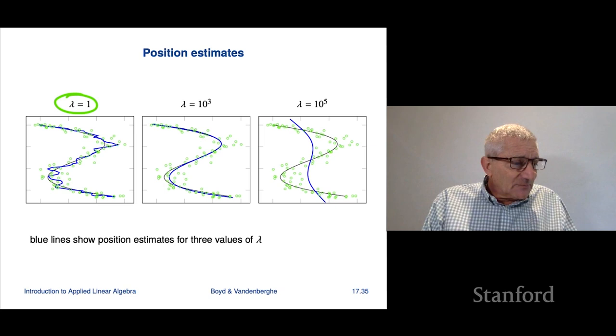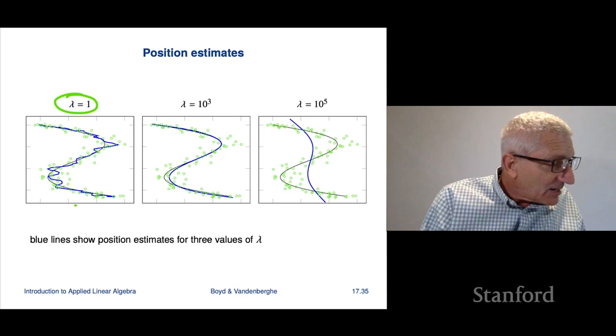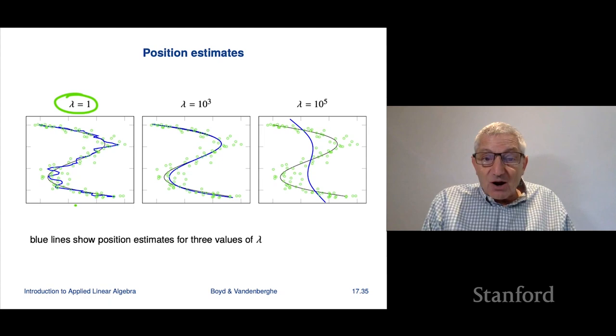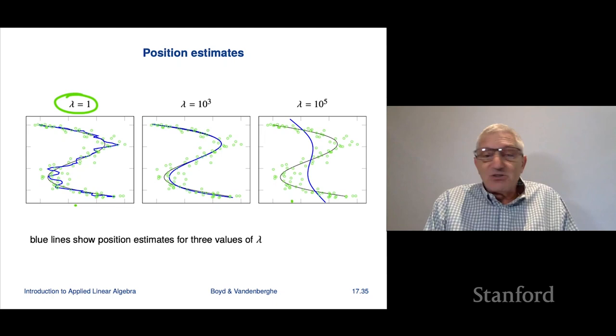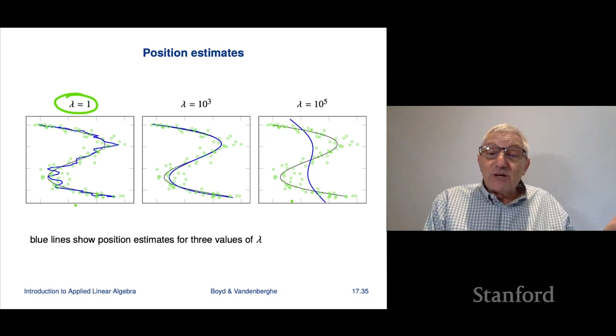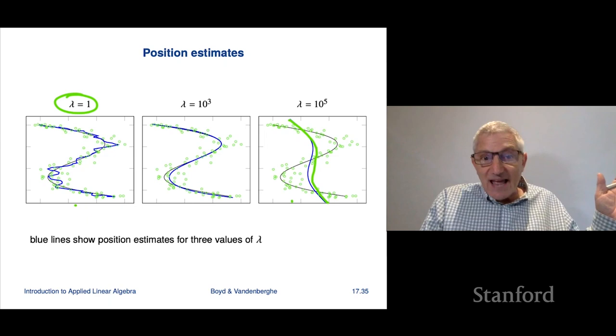And with 10 to the 5, it's not a good estimate now. And we can easily explain this. Roughly speaking, when lambda is 1, it means you trust these noisy sensor measurements, these green circles. You trust them too much. And as a result, your estimate of where are you is wiggling around too much. I'm anthropomorphizing this, but you get the idea. When lambda is 10 to the 5, basically, you're saying you don't trust the sensors like at all. And so you end up with something that looks like that, right? So that's the idea.